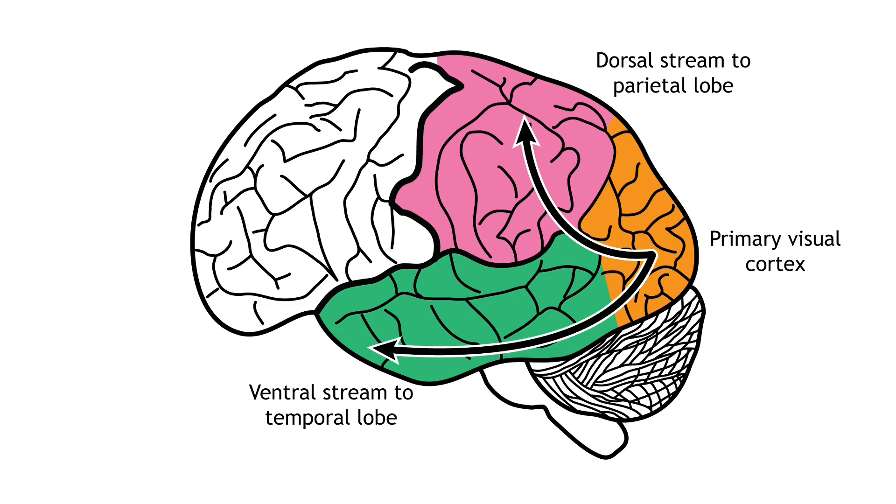In the visual system, there are two broad streams of information that leave the striate cortex. Information that travels from the primary visual cortex down through the inferior temporal lobe is responsible for determining object recognition, or what an object is. Differentiating between an apple and a person occurs in this stream.